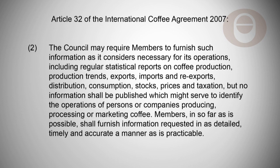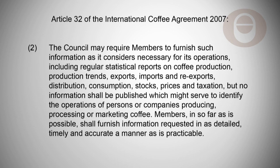2. The Council may require members to furnish such information as it considers necessary for its operations, including regular statistical reports on coffee production, production trends, exports, imports and re-exports, distribution, consumption, stocks, prices and taxation, but no information shall be published which might serve to identify the operations of persons or companies producing, processing or marketing coffee.